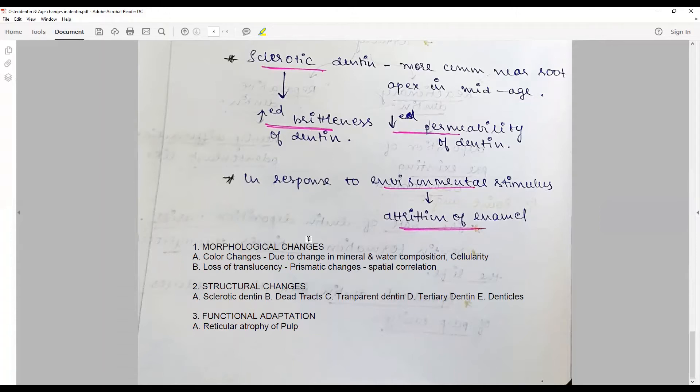Translucency in color change is due to subsequent remineralization or change in mineral and water composition. With age, dentine loses its ability to hold water. Water is an important constituent of dentine, and the viscoelastic properties are thereby altered.